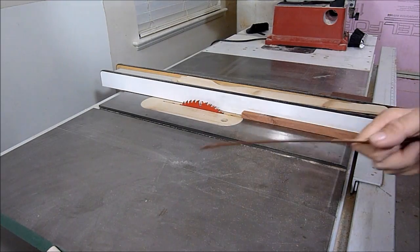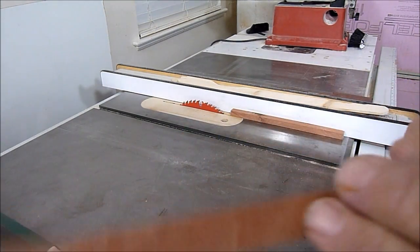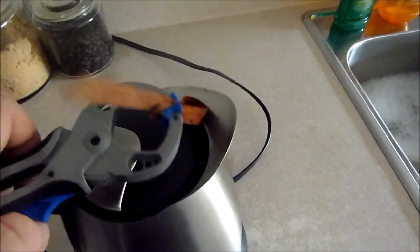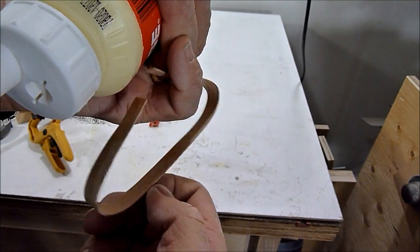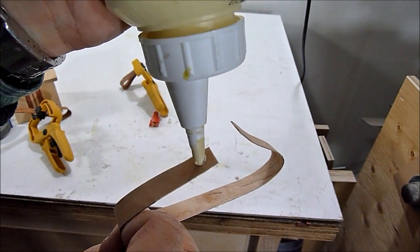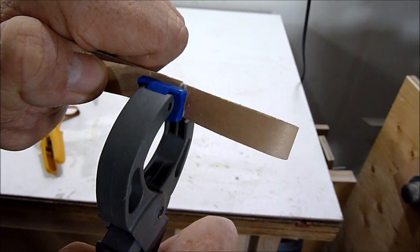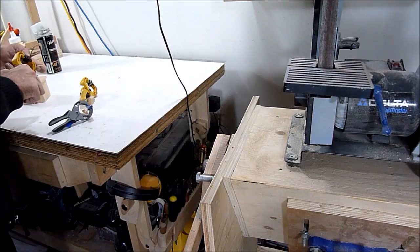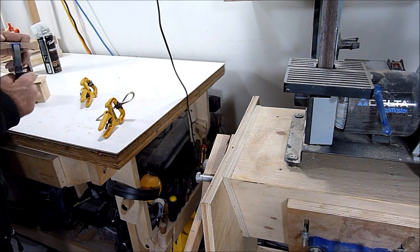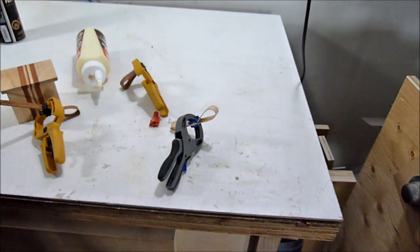To make the ribbon I'll just cut some thin strips on the table saw. I'll use the kettle and steam the wood this way. The steam will help bend the wood. I can now glue all the ribbon together and I'll wait for that to dry.